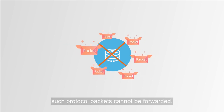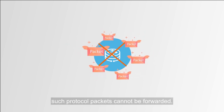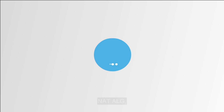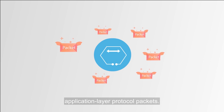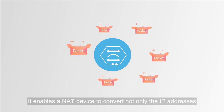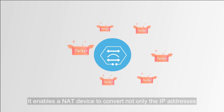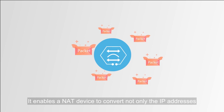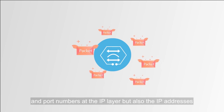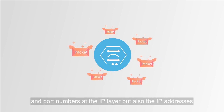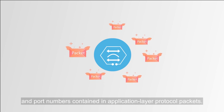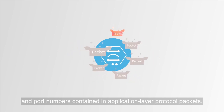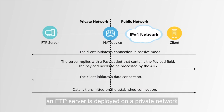As a result, such protocol packets cannot be forwarded. NAT ALG, short for Application Layer Gateway, converts address information contained in application layer protocol packets. It enables a NAT device to convert not only the IP addresses and port numbers at the IP layer, but also the IP addresses and port numbers contained in application layer protocol packets.